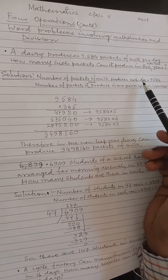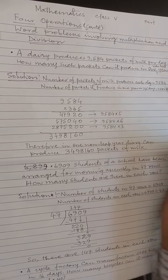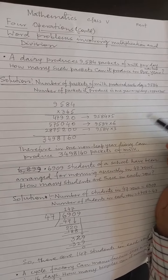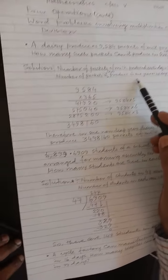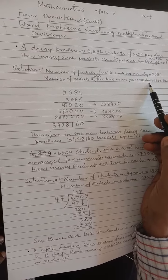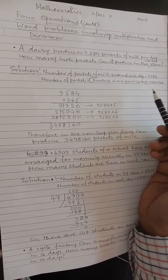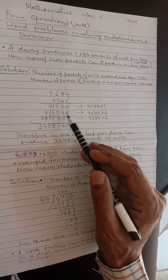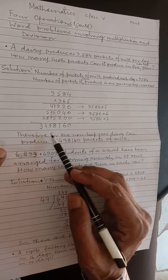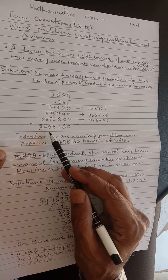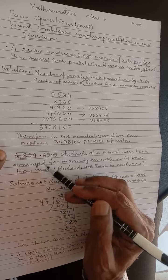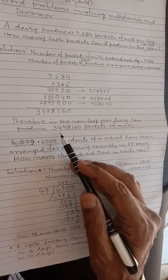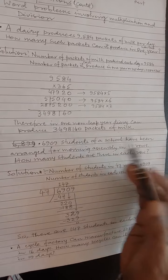The number of packets of milk produced each day is 9,584. The number of packets it can produce in one year or 365 days is equal to 9,584 into 365. We multiply the result. Therefore, in one leap year, dairy can produce 34,98,160 packets of milk.